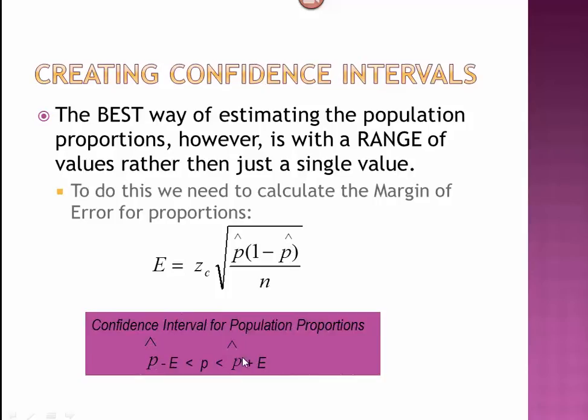Once we have our margin of error, we simply add it and subtract it from our point estimate, p-hat, which is our sample proportion.